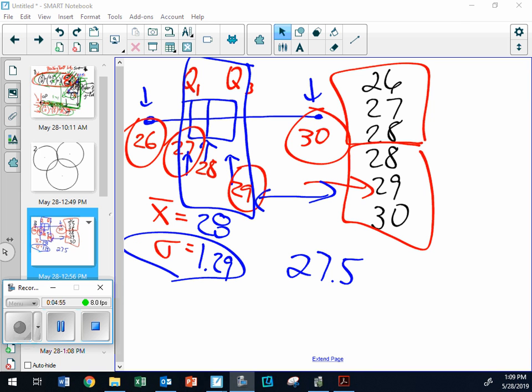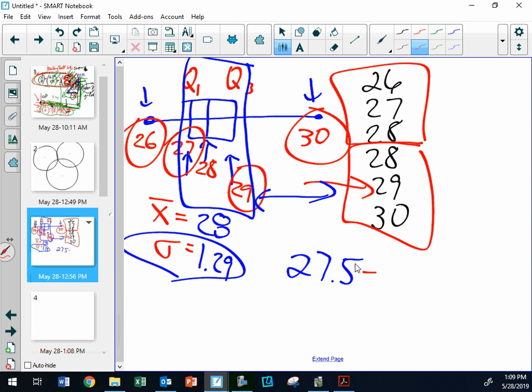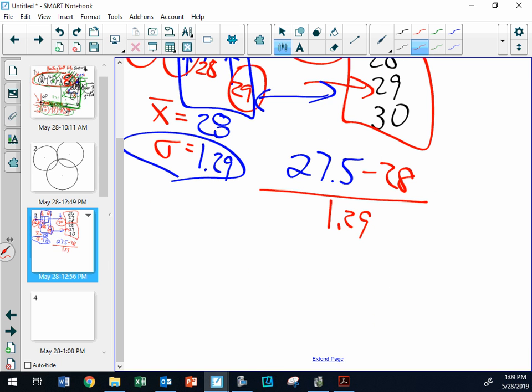So here's what we have. 27.5 is your score. You subtract off the average. The average in this case was 28, and then you divide by the standard deviation, which is 1.29. What did it come out to be? Negative 0.39. Now, was that a good score? It kind of depends. Would you agree that this person is below average a little bit? What if it had been a negative 1 Z score? One standard deviation below average.